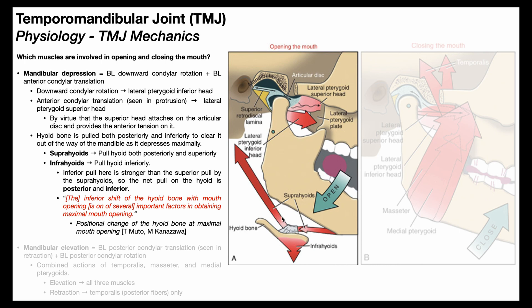The suprahyoids pull the hyoid posteriorly and superiorly, while the infrahyoids exert a pull inferiorly. Considering anterior versus posterior, no muscles pull the hyoid anteriorly, so the suprahyoid posterior pull wins out. For superior versus inferior, the infrahyoid inferior pull is stronger than the suprahyoid superior pull. So the net pull on the hyoid is posterior and inferior. This inferior shift of the hyoid with mouth opening is one of the important factors in achieving maximal mouth opening — if the hyoid can't move out of the way, the mandible cannot depress maximally.